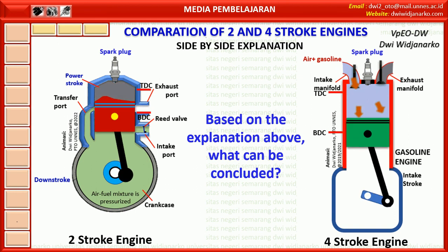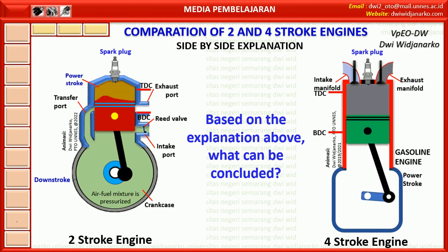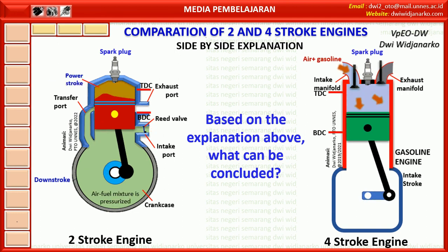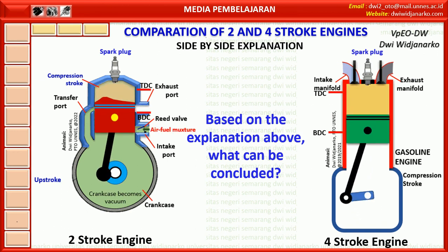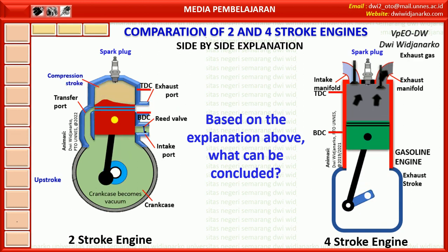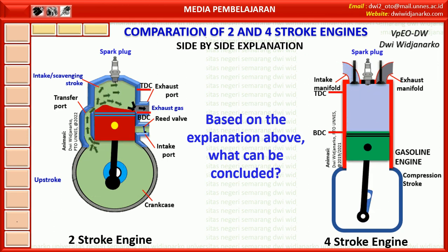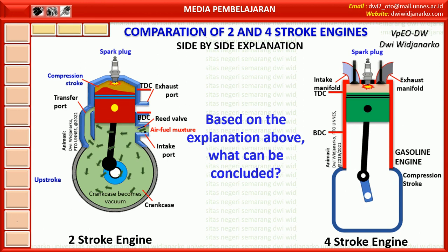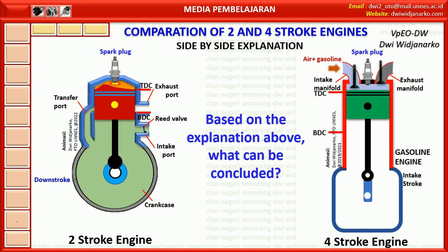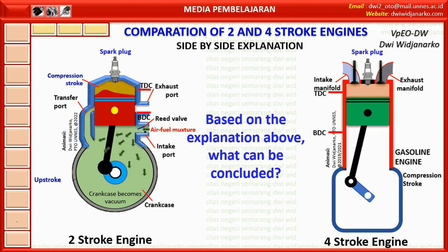4 — In a 2 stroke engine, the piston acts as a valve to open and close the transfer port and exhaust port. In the 4 stroke engine, opening and closing of the intake and exhaust manifolds is carried out by valves. 5 — In a 2 stroke engine, the compression stroke starts when the transfer port and exhaust port are closed by the piston, while in a 4 stroke engine the compression stroke begins when the intake valve is closed. 6 — In a 2 stroke engine, the power stroke ends when the exhaust port opens before the piston reaches bottom dead centre. 7 — In a 2 stroke engine, the exhaust stroke occurs at the same time as the intake of the air fuel mixture into the cylinder. In a 4 stroke engine, the exhaust stroke begins when the exhaust valve opens and the piston moves from BDC to TDC.